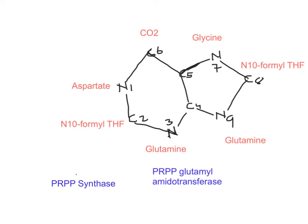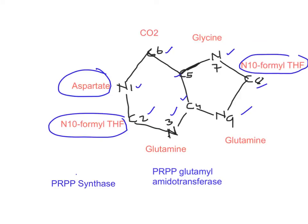Let's look at the purine ring. The purine ring has nine atoms, and the numbering is done in an anti-clockwise manner: nitrogen 1, carbon 2, nitrogen 3, carbon 4, carbon 5, carbon 6, nitrogen 7, carbon 8, and nitrogen 9. Nitrogen 1 is given by aspartate. Carbon 2 and carbon 8 are both given by N10-formyl tetrahydrofolate. Nitrogen 3 is given by the amide nitrogen of glutamine, and nitrogen 9 is also given by the amide nitrogen of glutamine.